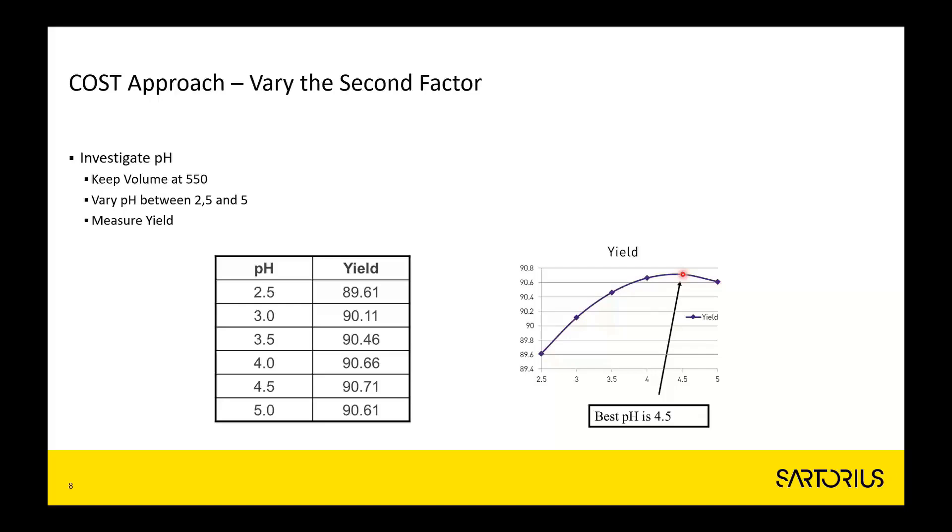So you would then be led to think that the combination pH 4.5 and volume 550 would be the best possible combination of pH and volume. But is that really the case? Let's take a little overview by using another type of plot of what we have done.